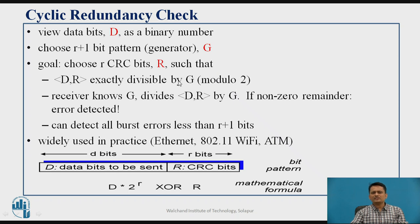You use the generator polynomial and the data gets divided by that generator polynomial. The receiver knows the generator polynomial, so the receiver again divides the transmitted code by the same generator polynomial. If the remainder is non-zero then an error is detected, and if the remainder is zero then there is no error in the transmission. CRC is a quite popular technique, widely used in practice for Ethernet, 802.11 Wi-Fi, and ATM as well.